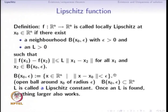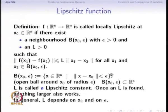We are using an open ball, which means the distance of every point in that ball is strictly less than epsilon from the center x0. L is called the Lipschitz constant. Once an L is found, anything larger also satisfies the inequality. In general, L depends on both x0 and on epsilon.